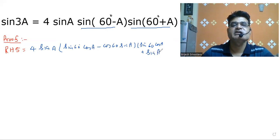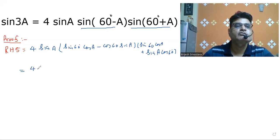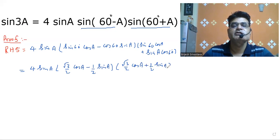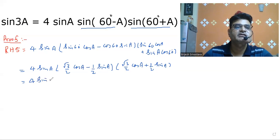And for sin(A + 60°): sin A cos 60° plus cos A sin 60°. Substituting sin 60° = √3/2 and cos 60° = 1/2, we get terms involving √3/2 cos A and 1/2 sin A.